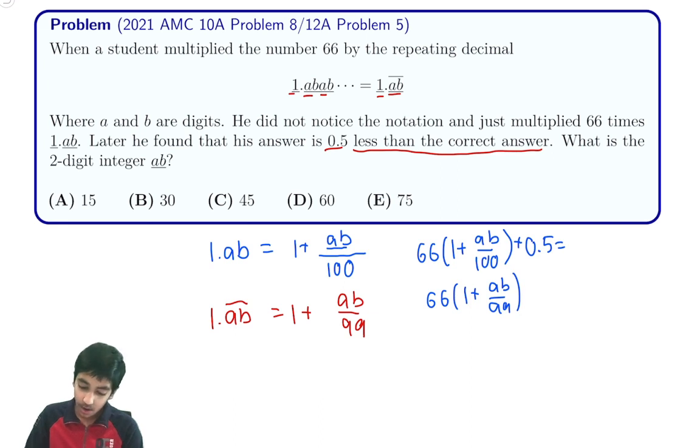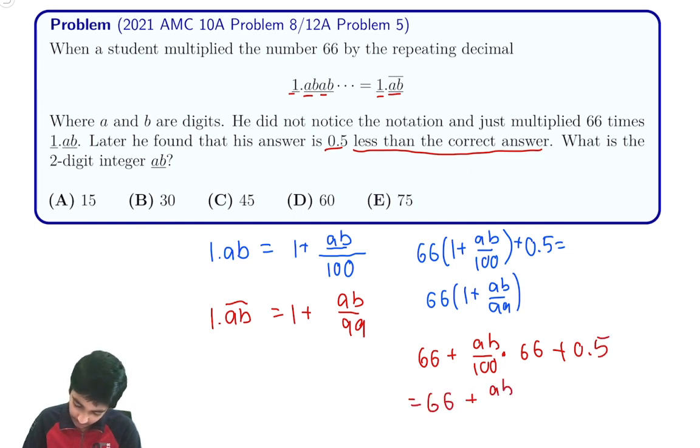So now what can we do from there? We can see that 66 plus AB over 100 times 66 plus 0.5 will have to equal 66 plus AB over 99 times 66.